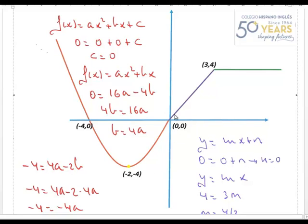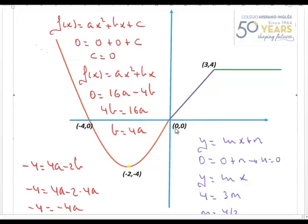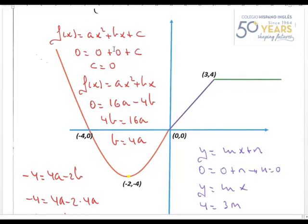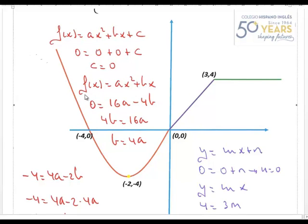Al decirme que pasa por (0,0) y por (-4,0), automáticamente el eje de simetría tiene que estar en x = -2. Le digo matemáticamente: quiero que para x=0 la y me dé 0. Sustituyendo x=0, me queda que c=0. Si c=0, la parábola va a ser de este tipo: f(x) = ax² + bx.